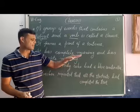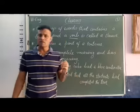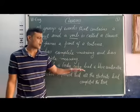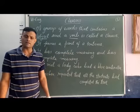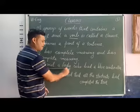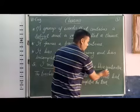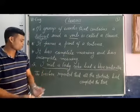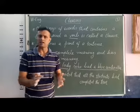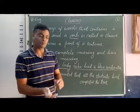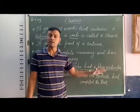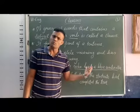Now let's understand clauses with an example: 'I met a lady who had a blue umbrella.' In this sentence there are two clauses. First: 'I met a lady' — it has complete meaning. Second: 'who had a blue umbrella' — it does not have complete meaning.